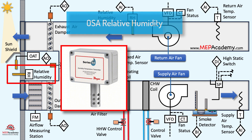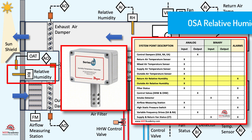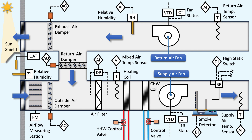The outside air relative humidity sensor continuously monitors the relative humidity level of the outdoor air before it enters the HVAC system. The data is used as an analog input for the control algorithms that regulate the operation of humidification or dehumidification components to achieve and maintain the desired indoor relative humidity level.